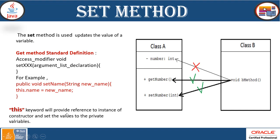The this keyword provides a reference to the instance of the constructor and sets values to the private variable. A constructor is the method we create — which is automatically created in Java when we create a class — with the same name as the class. We'll cover this topic in detail in the Java course. For now, just understand that the this keyword refers to the instance of the constructor and assigns the value to the variable.